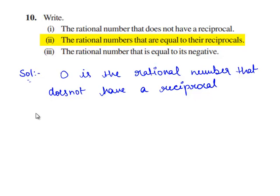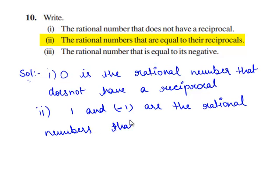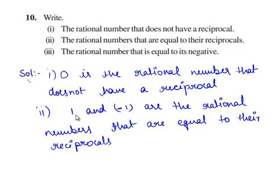Now let us go for the second bit. Here we need to write the rational numbers that are equal to their reciprocals. 1 and -1 are the rational numbers that are equal to their reciprocals, because 1 times 1 gives 1, and -1 times -1 again gives 1. Therefore, 1 and -1 have their multiplicative inverse as 1 and -1 itself.